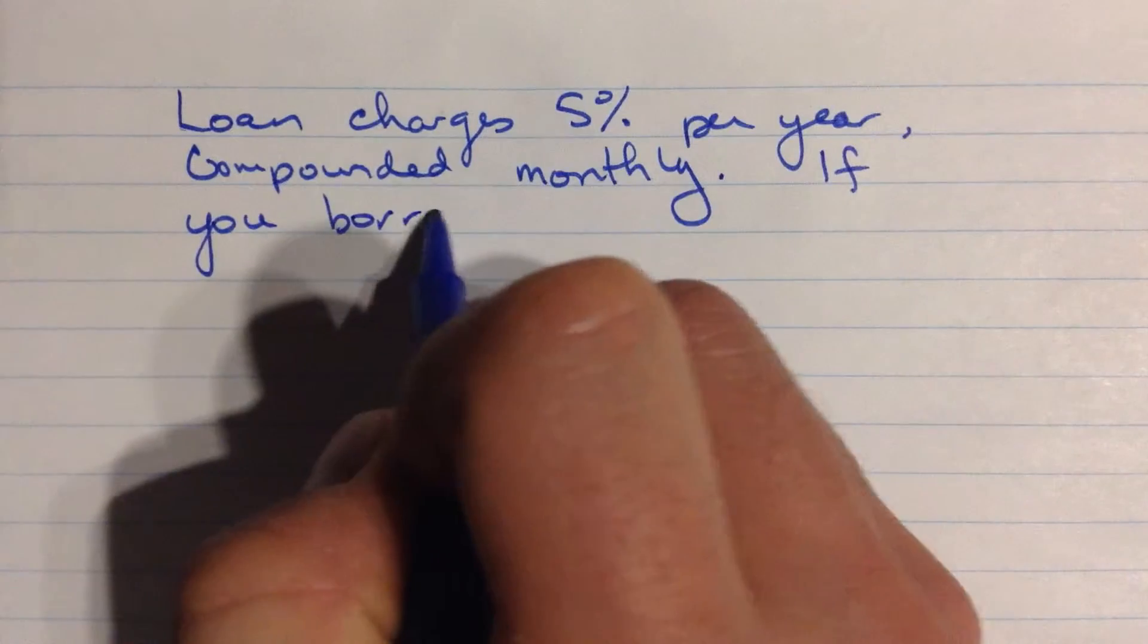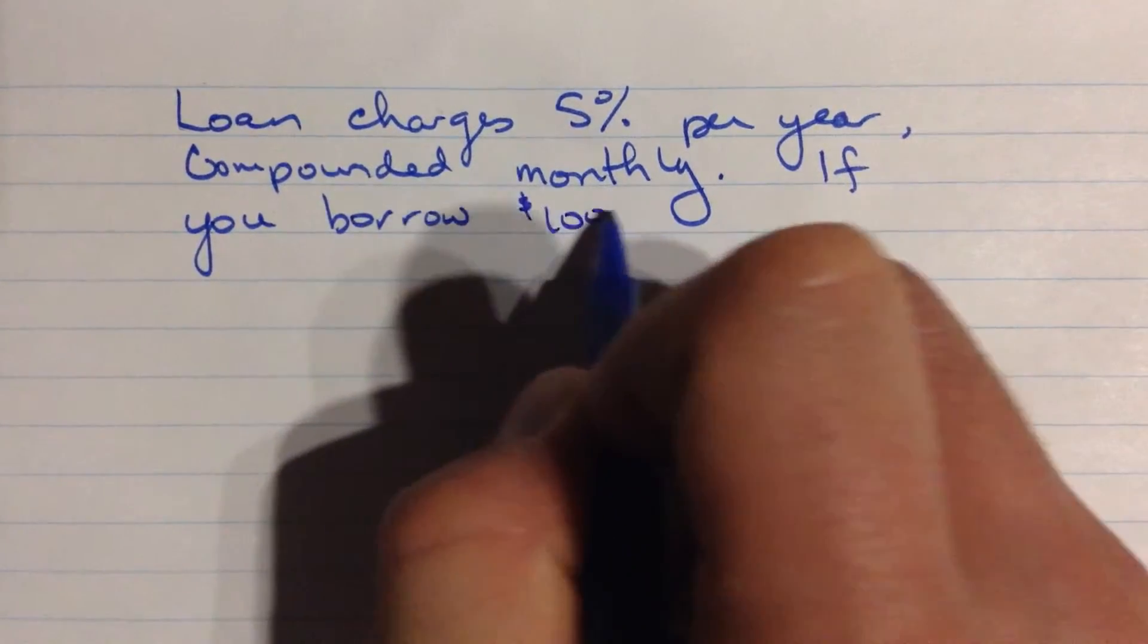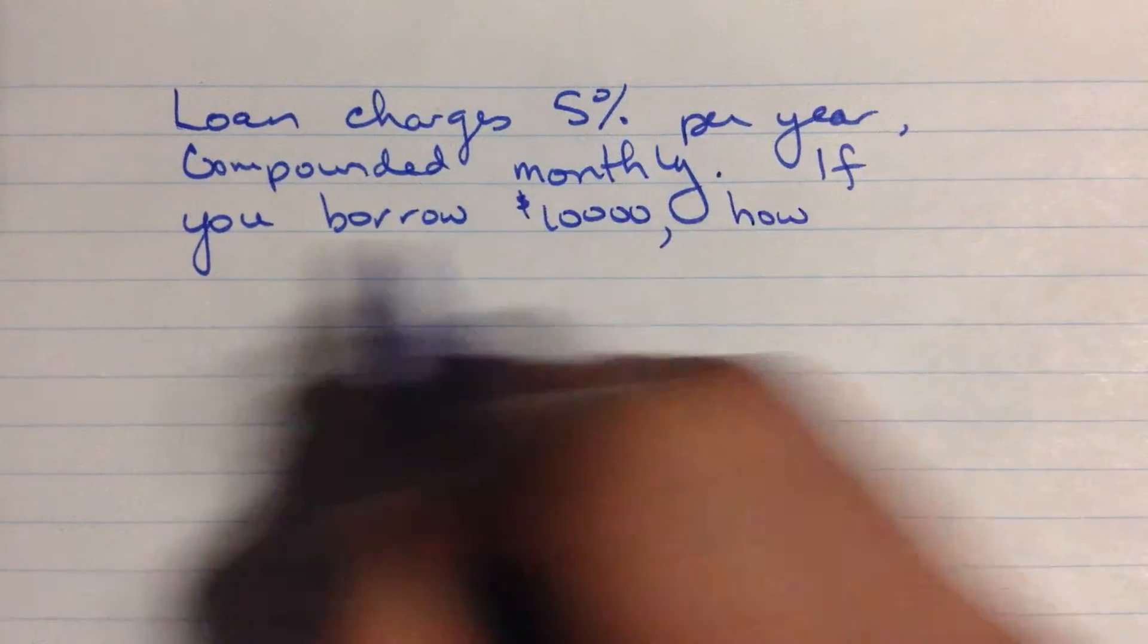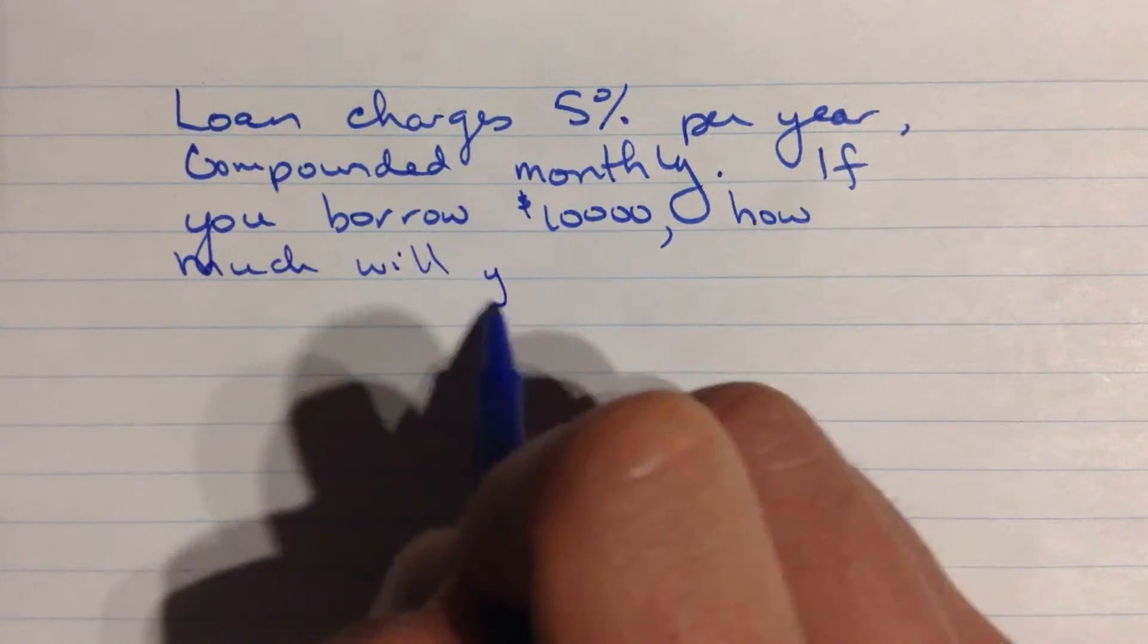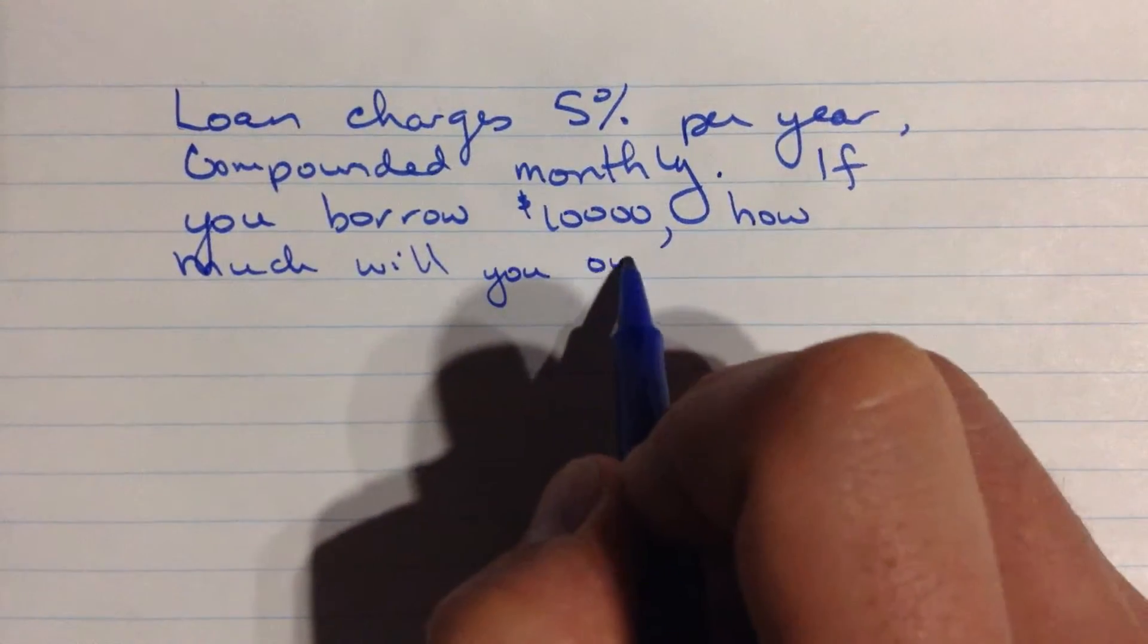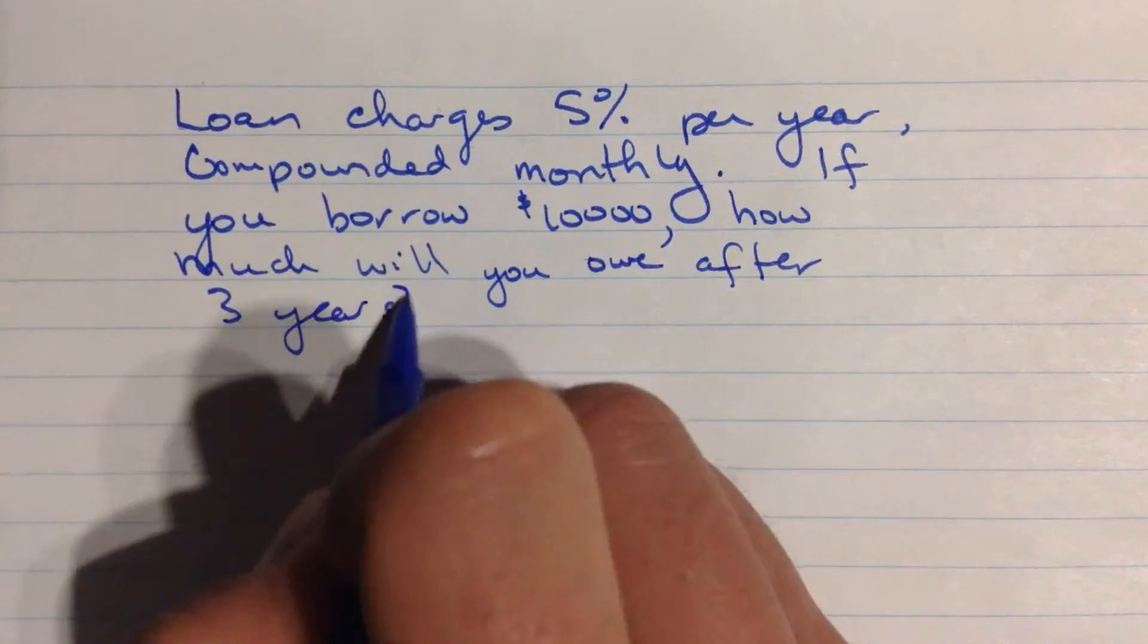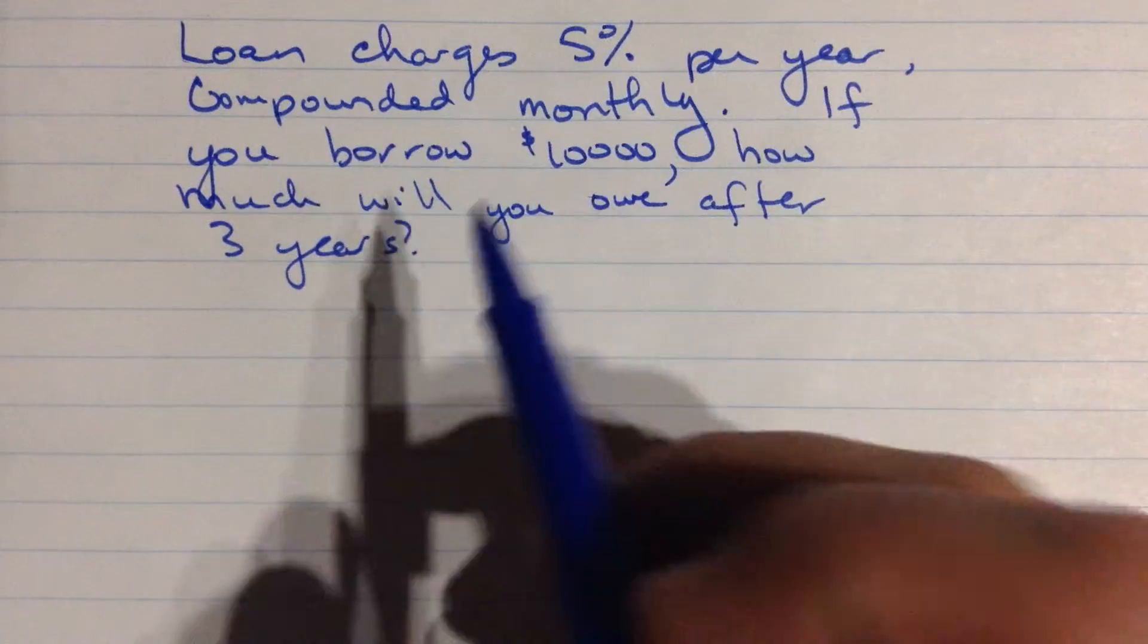If you borrow, let's say $10,000. How much will you owe after three years? And this is assuming you don't pay off anything in the middle. You just borrow the money, wait three years, and then give it back plus the interest.